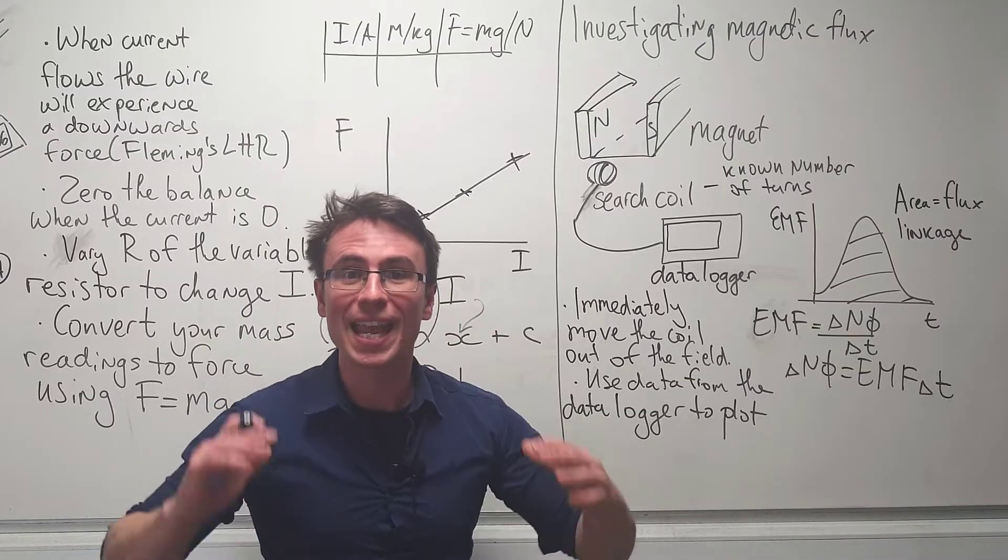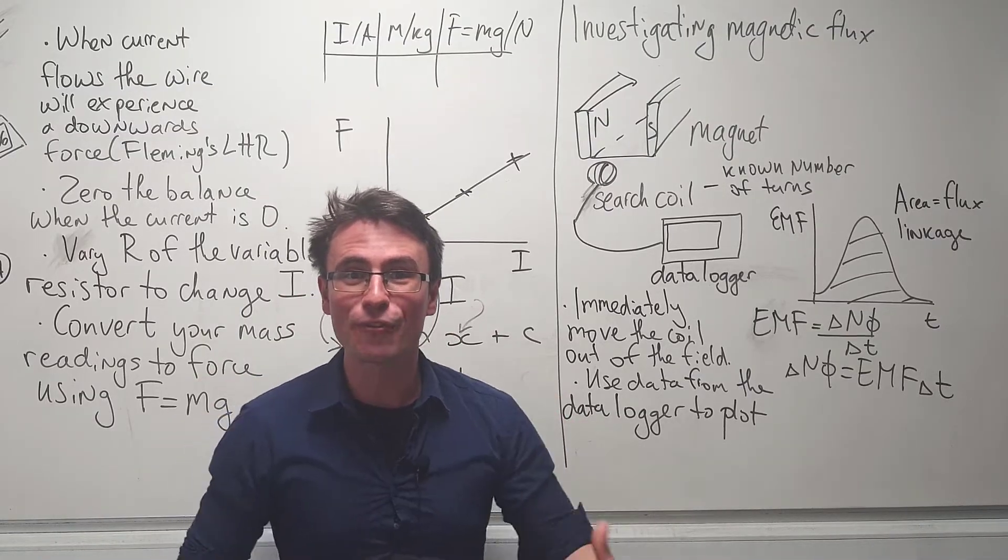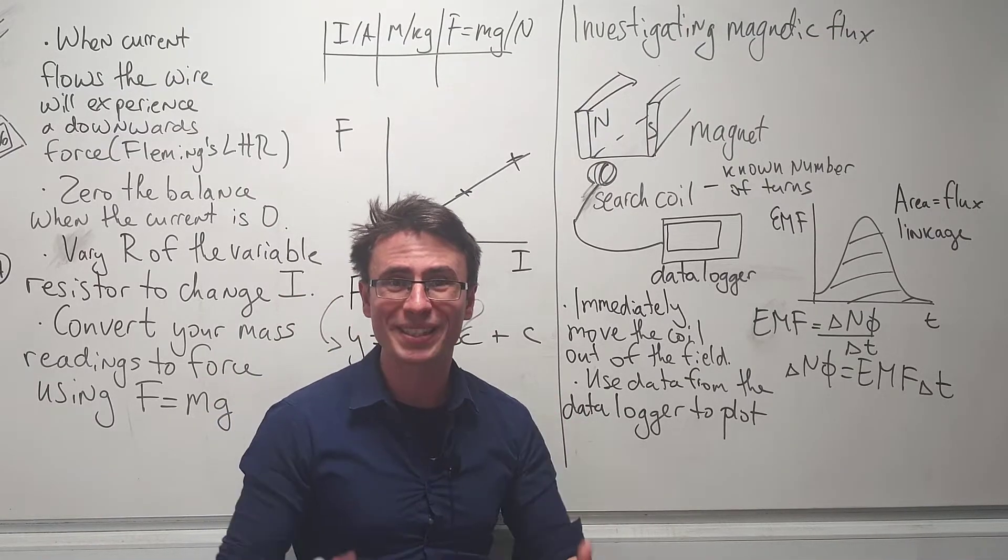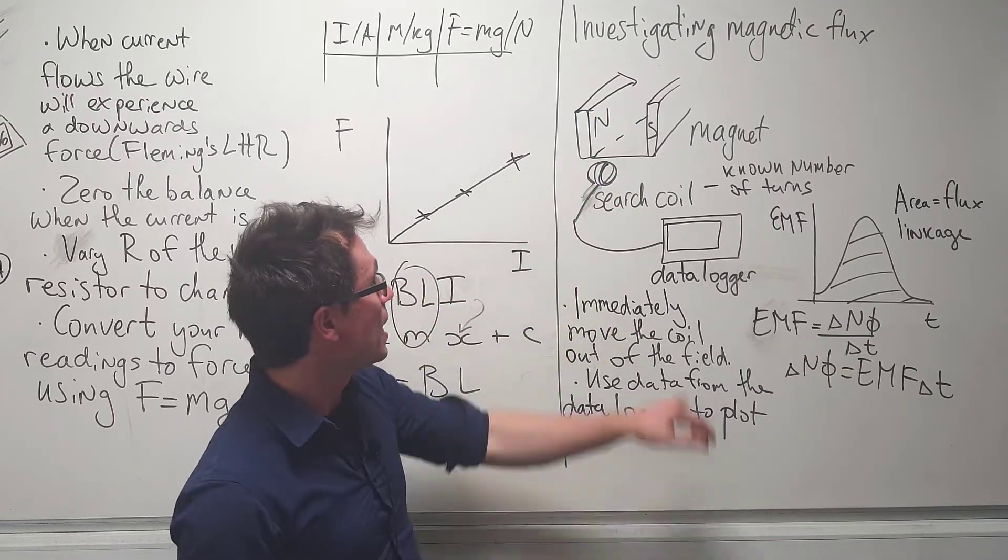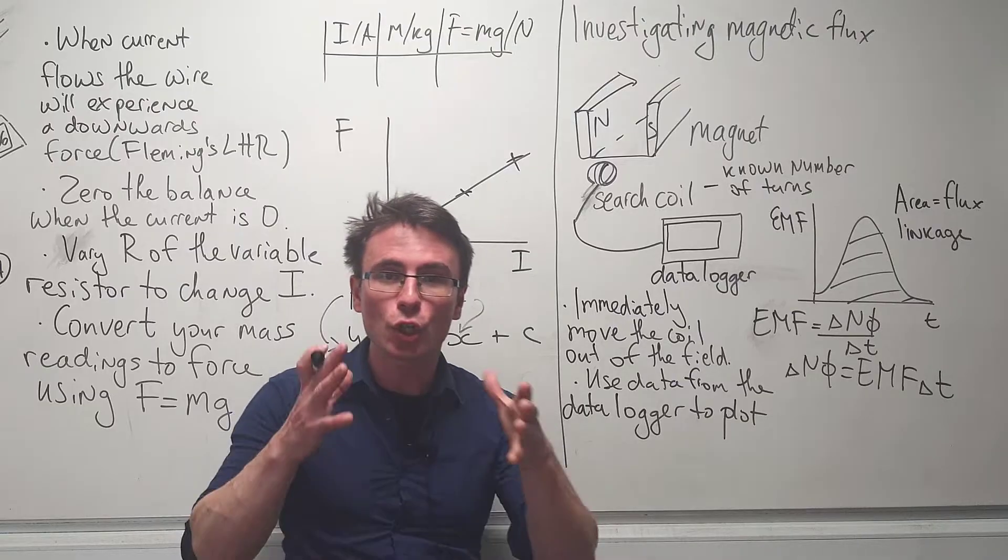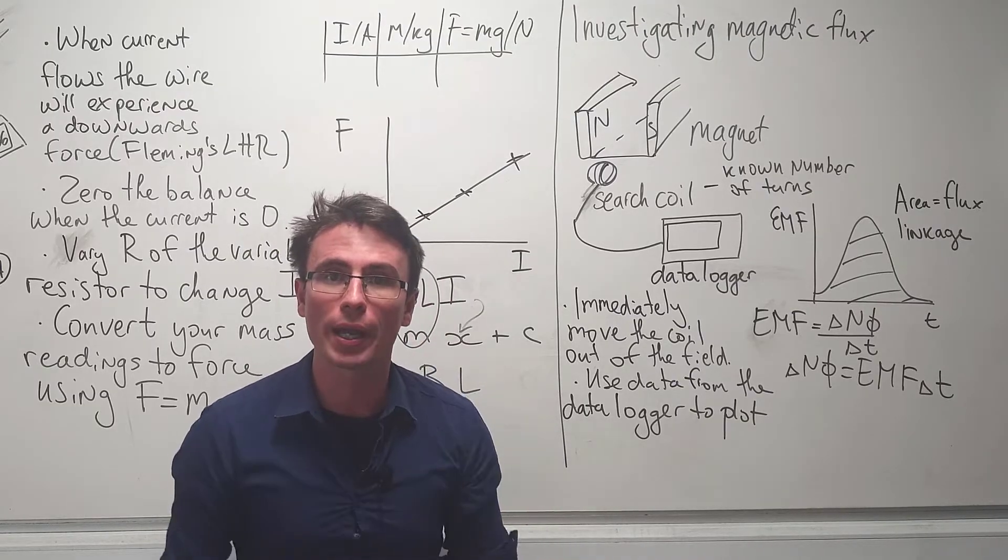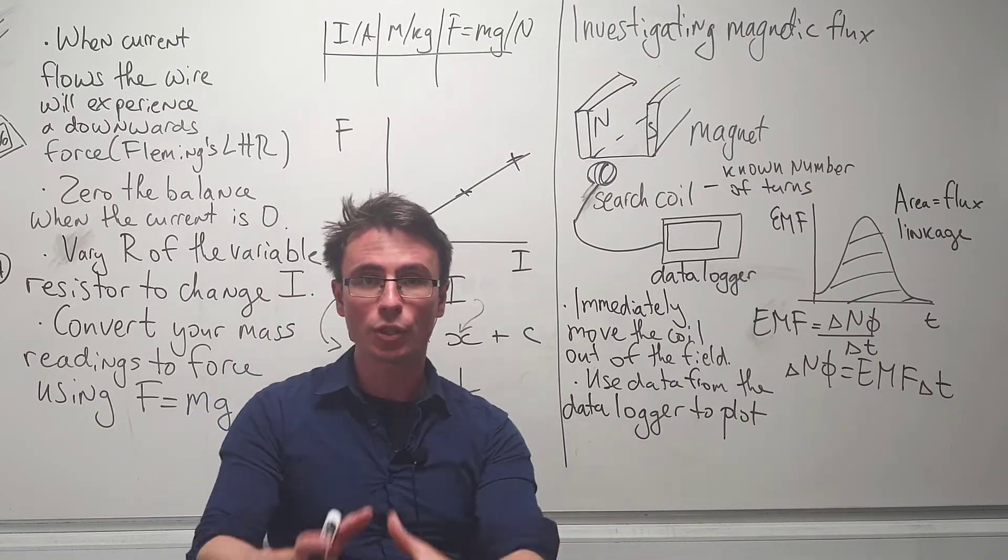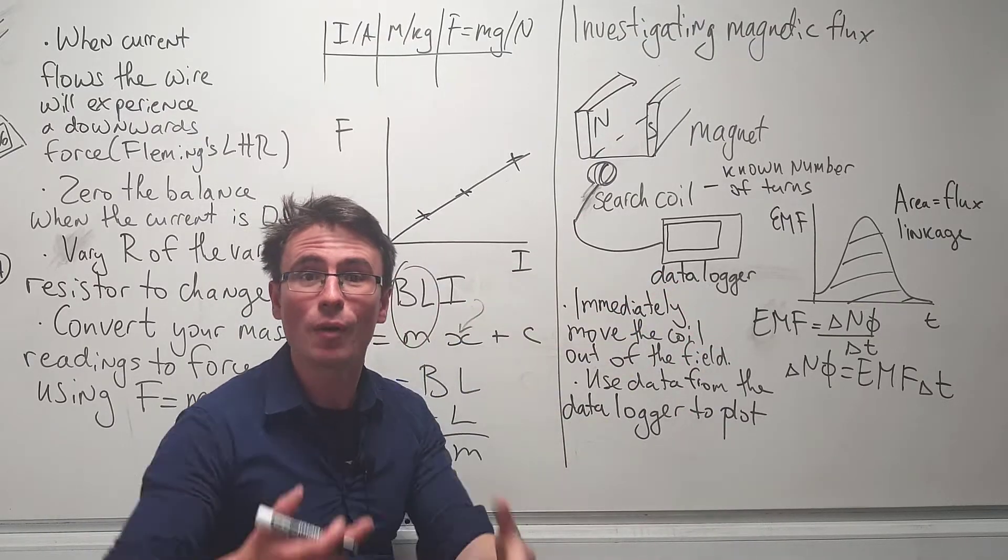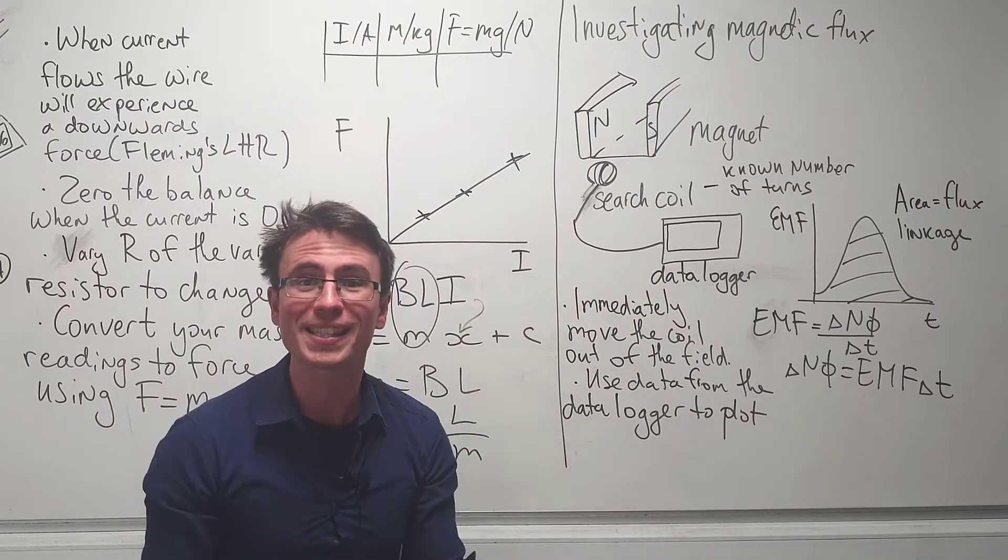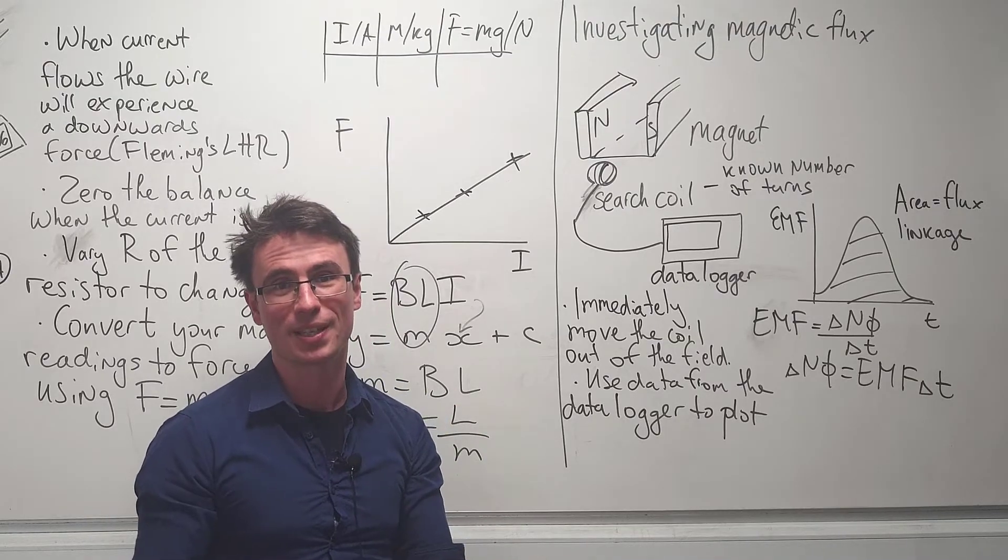We could also investigate magnetic flux using a very simple setup with something known as a search coil and a simple magnet. Now a search coil is just a little coil of wire with some known number of turns. We can often connect this to a data logger or even an oscilloscope to investigate the magnetic flux properties.